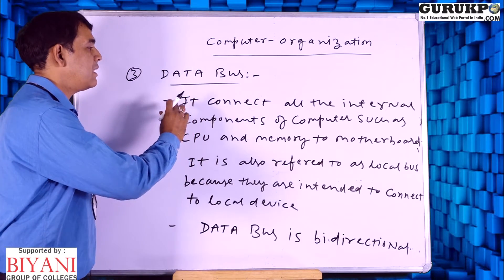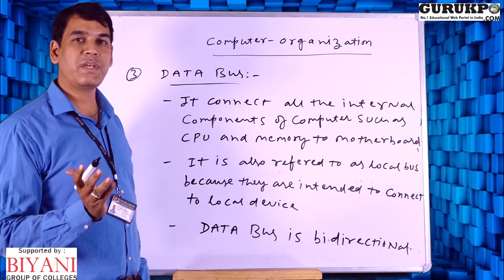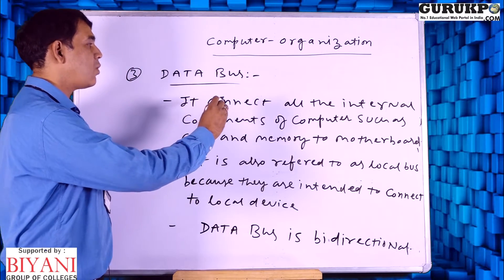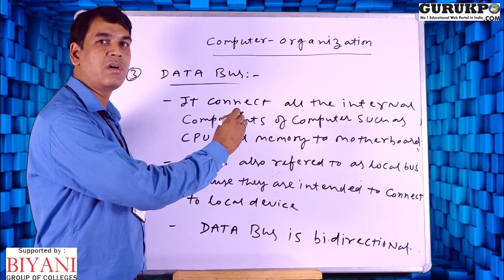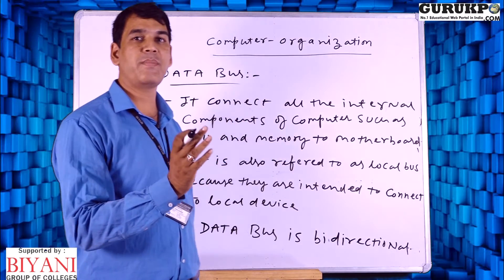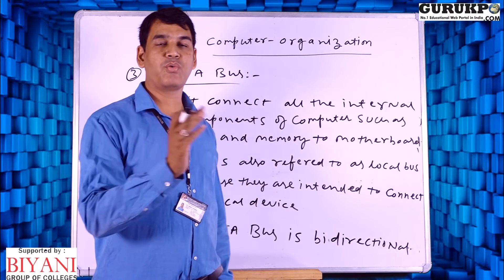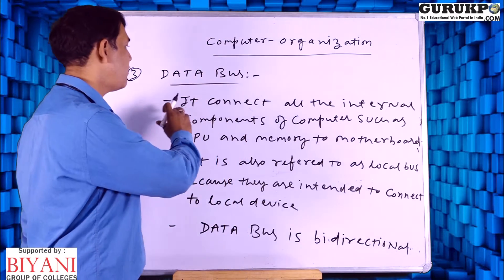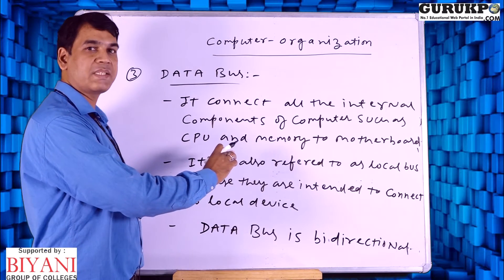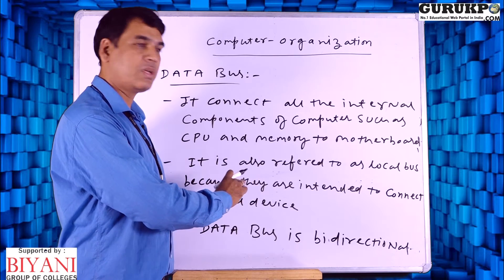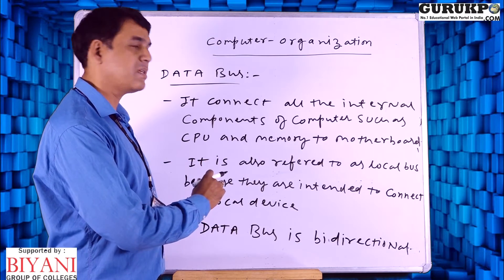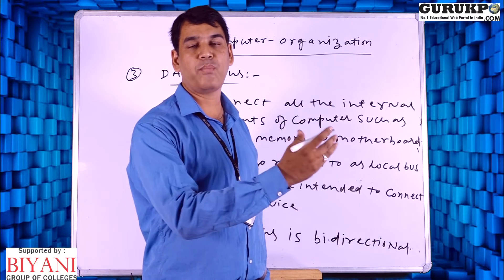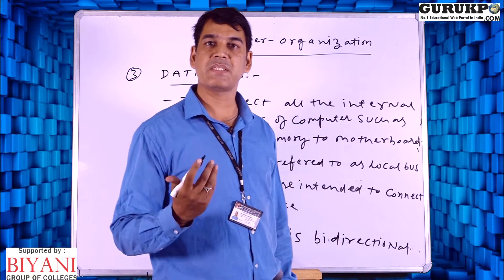The data bus is related to interacting with data. We can transfer data by the data bus from one place to another place. It connects all the internal components of the computer, such as the CPU and memory, to the motherboard. Whenever we use the CPU, motherboard, and memory and want to transfer data between them, we use the data bus. It is also referred to as a local bus because it is intended to connect local devices. The data bus is bidirectional, meaning we can communicate in both directions — forward and backward.